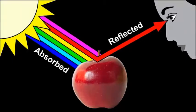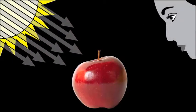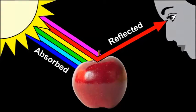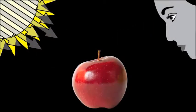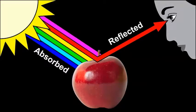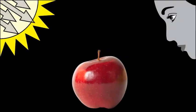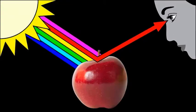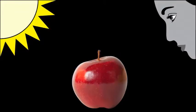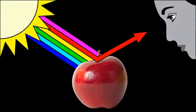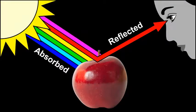For example, we see that the apple is red because the red color is reflected. All of the other colors are absorbed by the apple. Since colors are different wavelengths of light, we can also say that the apple is reflecting the red wavelength of light into our eyes and absorbing the other wavelengths of light.